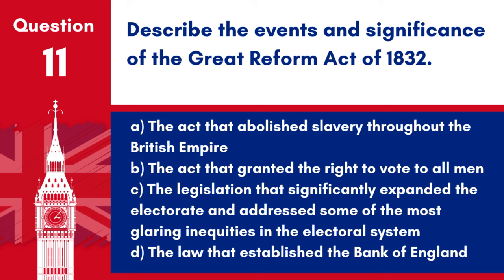Question 11: Describe the events and significance of the Great Reform Act of 1832. a. The act that abolished slavery throughout the British Empire. b. The act that granted the right to vote to all men. c. The legislation that significantly expanded the electorate and addressed some of the most glaring inequities in the electoral system. d. The law that established the Bank of England. Answer: c. The Great Reform Act of 1832 was a milestone in the development of the British parliamentary system, paving the way for further electoral reforms.